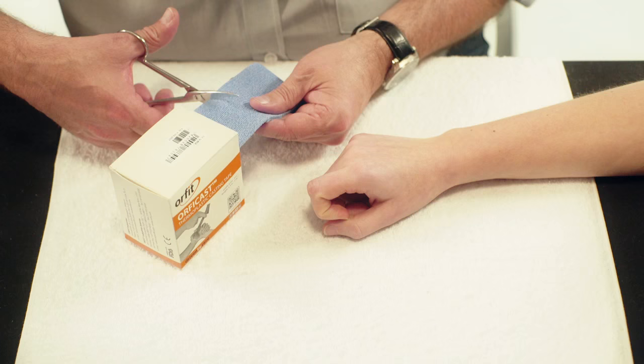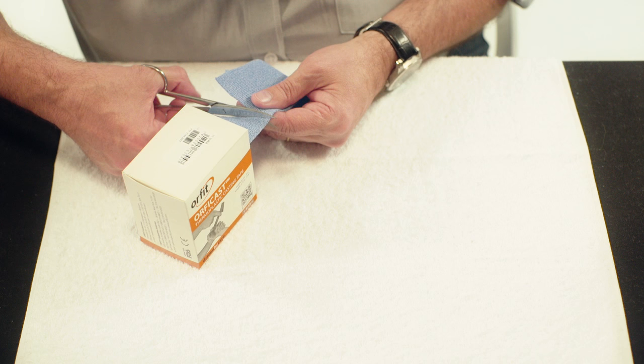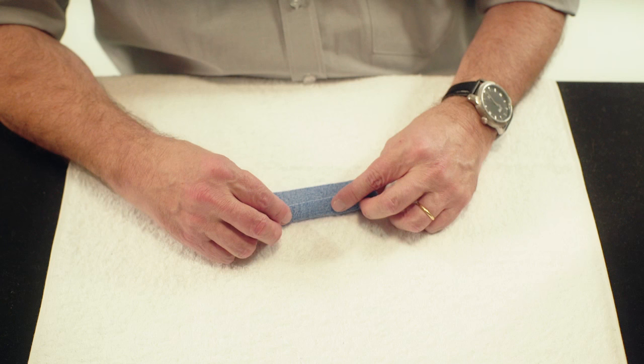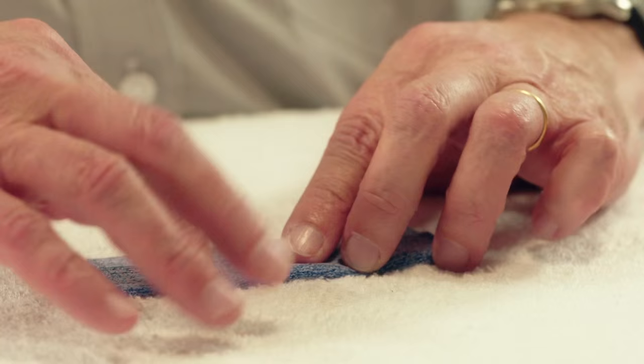Use a strip of 6 cm wide orthocast. Measure the width of the hand's MCP joints and cut the orthocast accordingly. Fold the orthocast in thirds lengthwise.